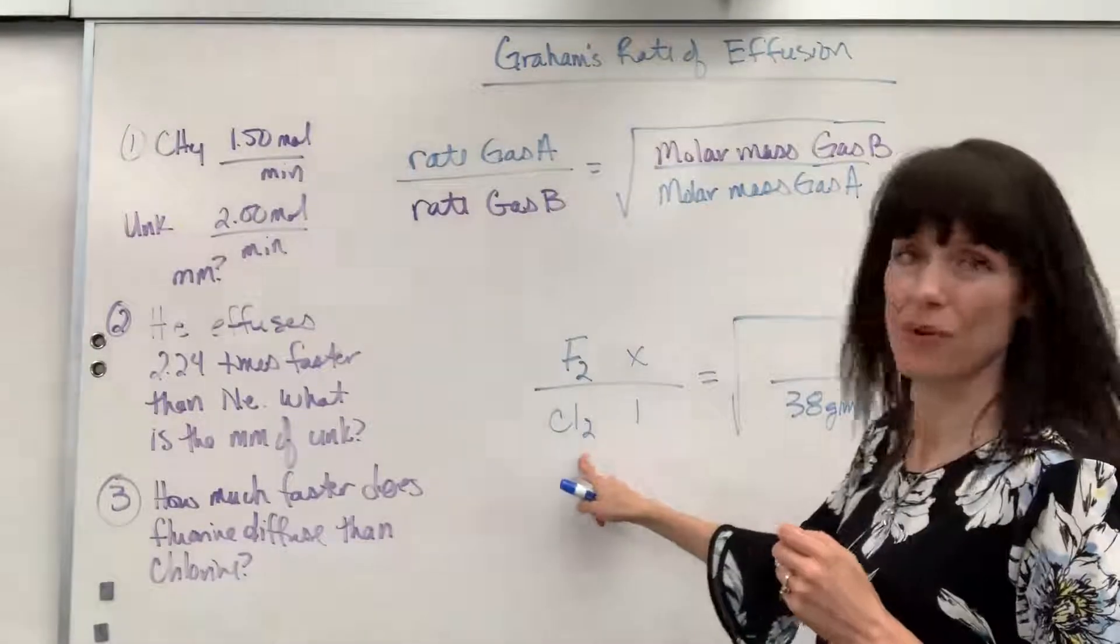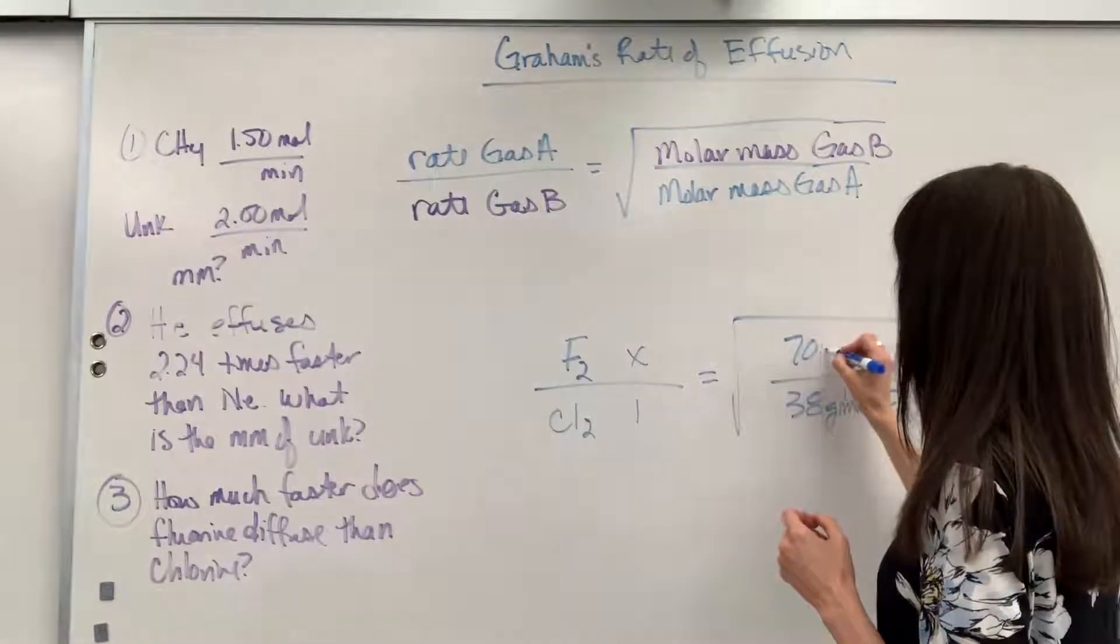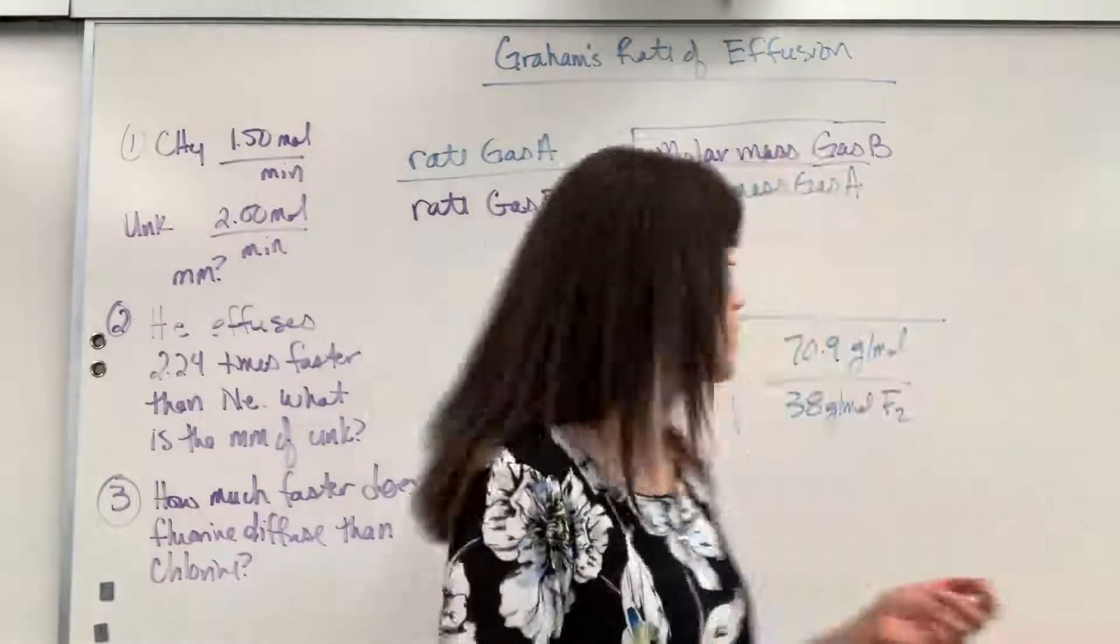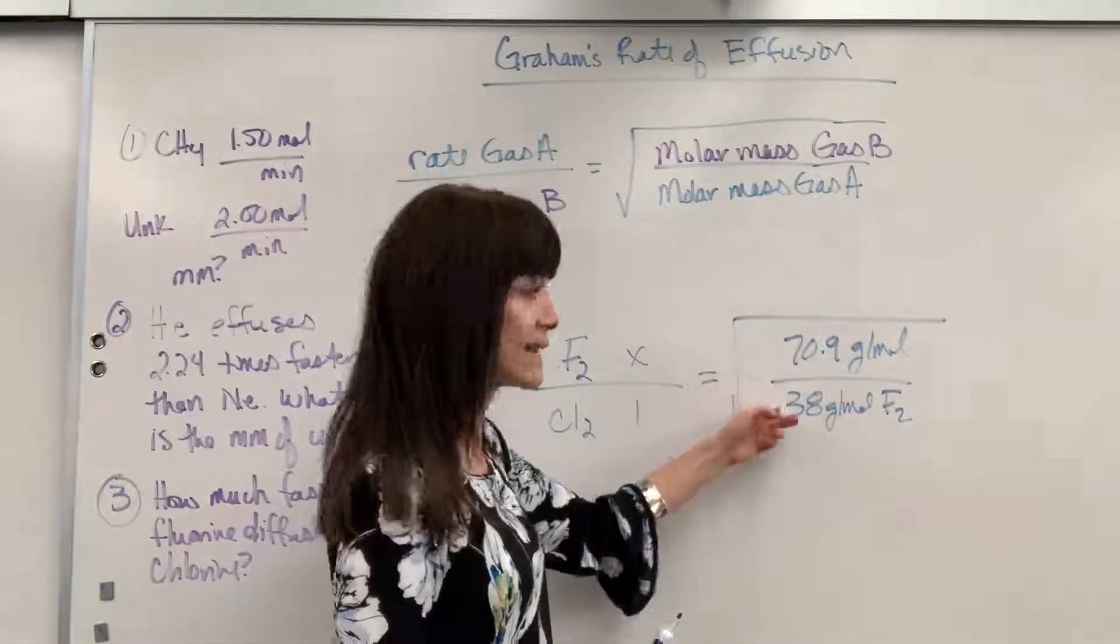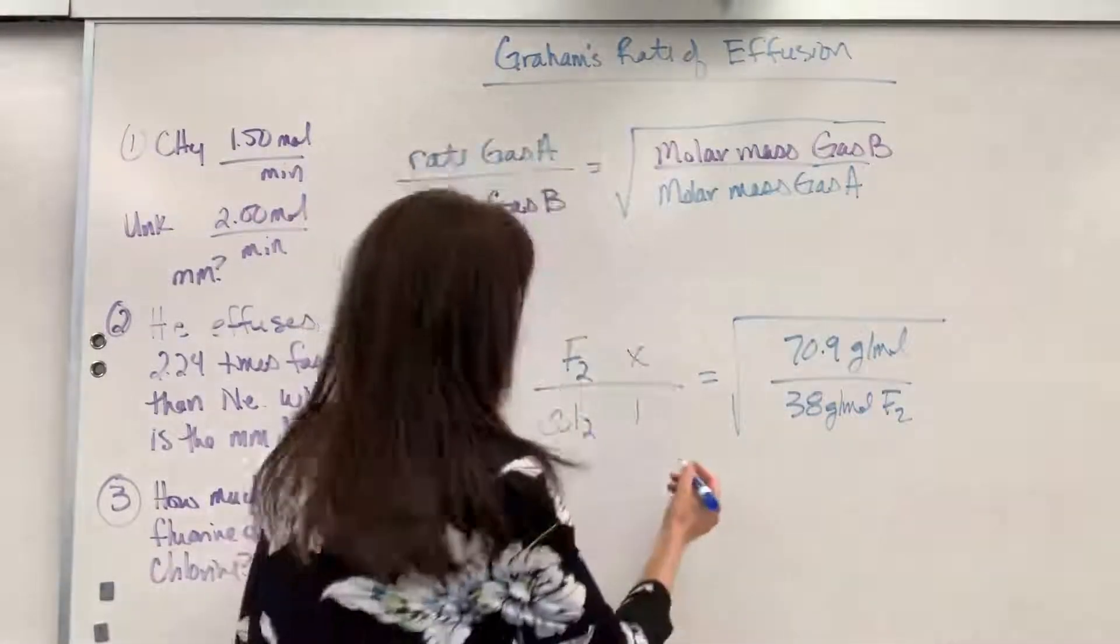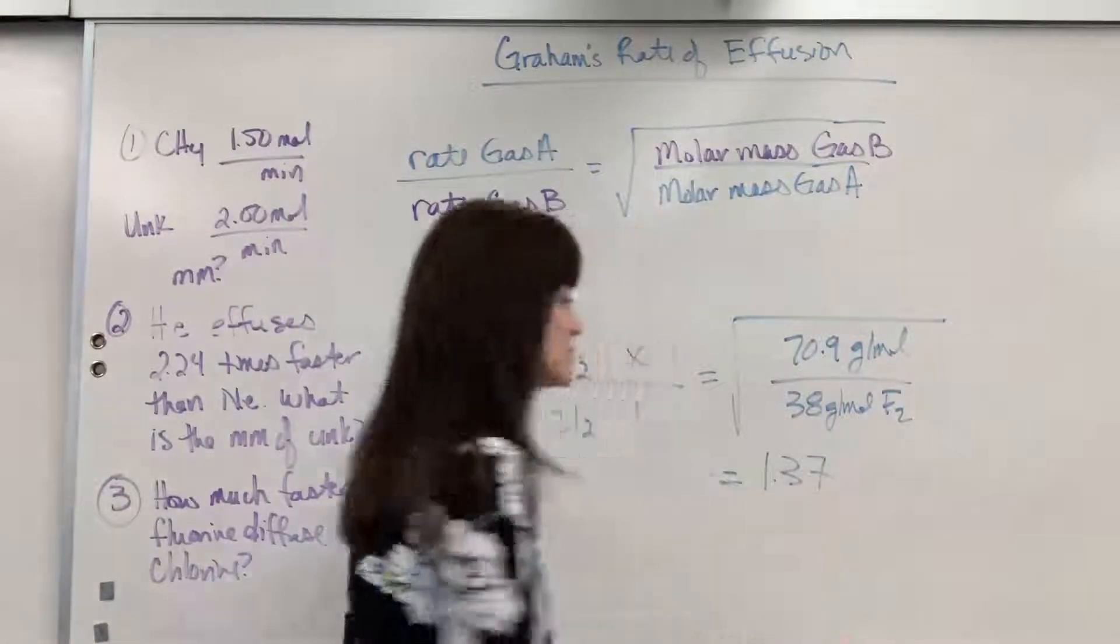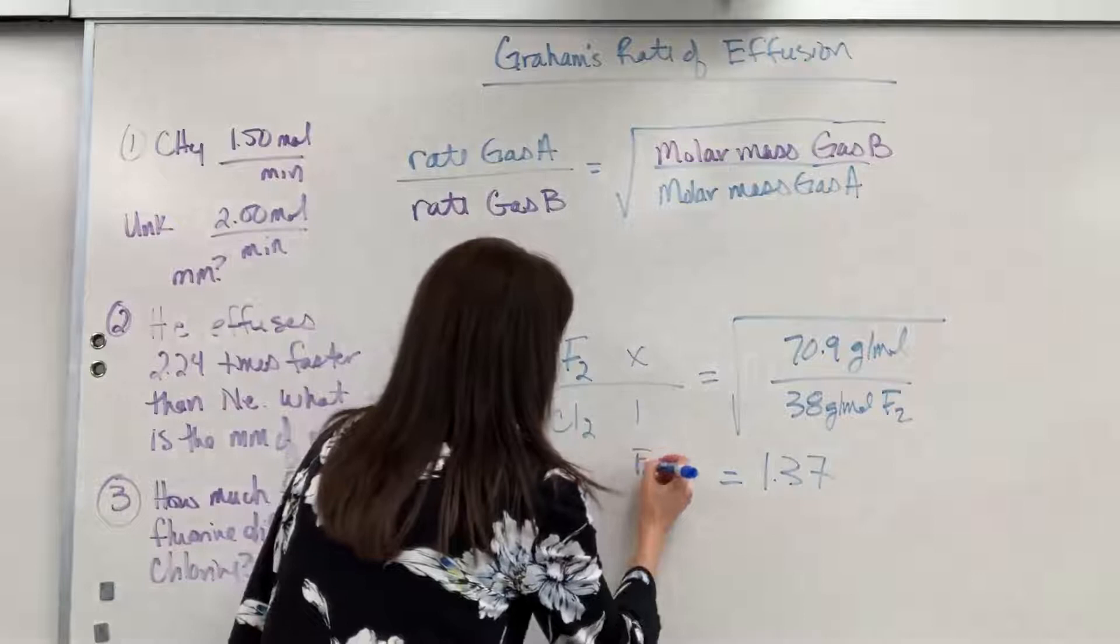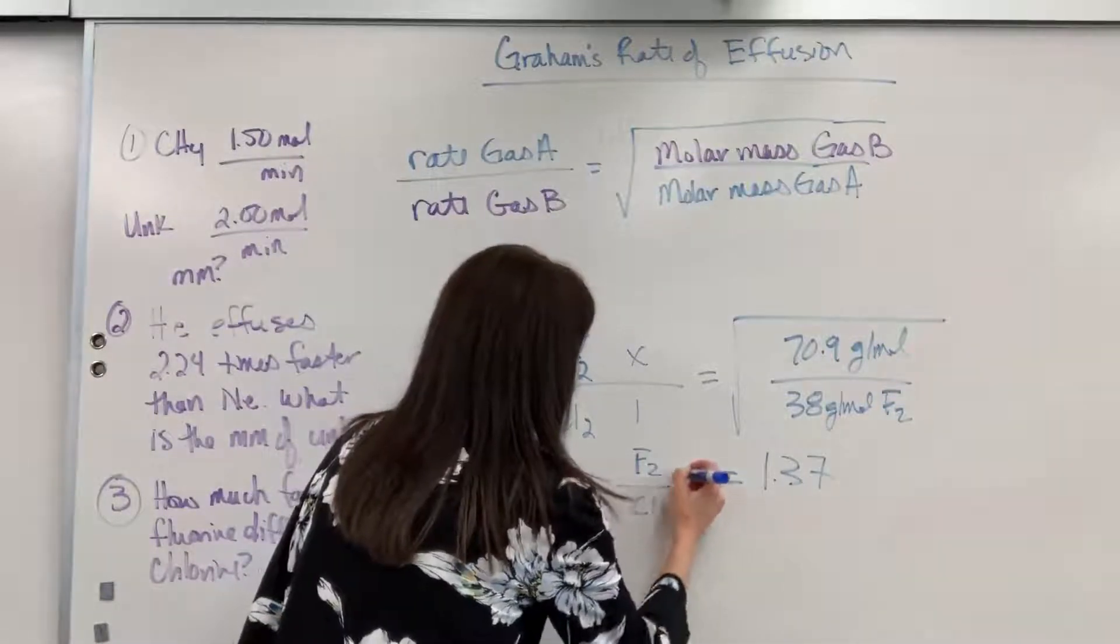Chlorine 35.45 times that by 2 is 70.9 grams per mole. So, we're going to divide this and then take the square root and that value is 1.37. That's the number we get. And that equals, remember, fluorine compared to chlorine rates.